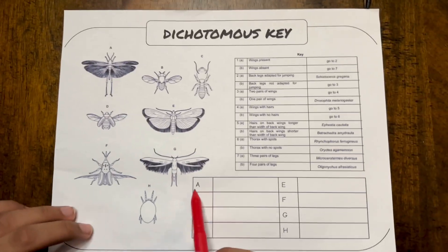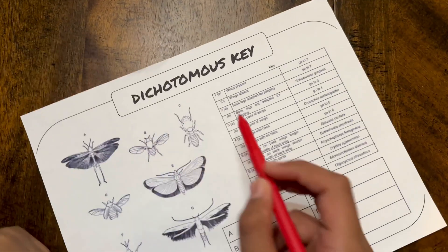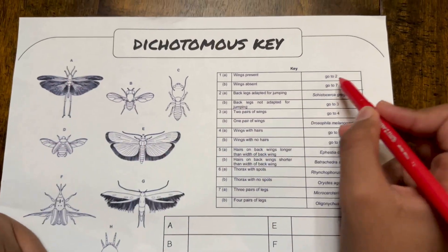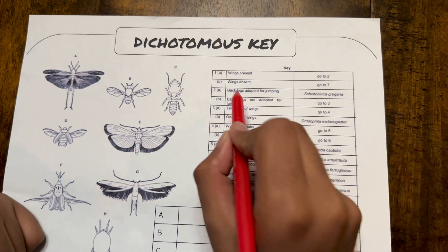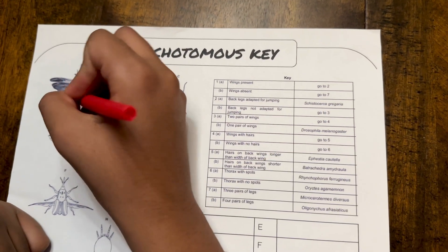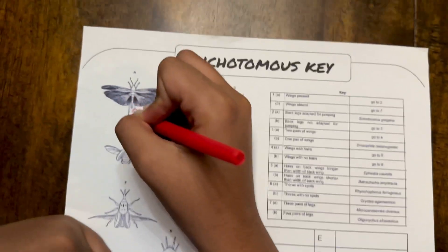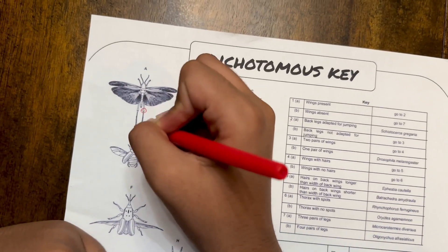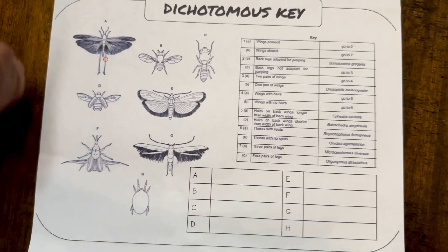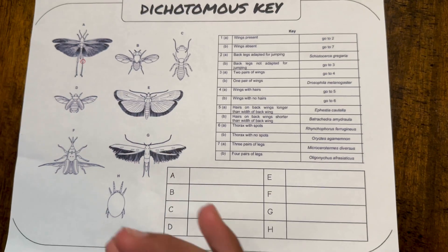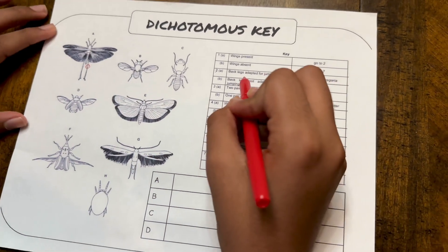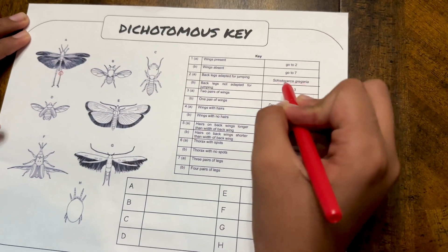Let's take organism A. The first question is: are wings present or wings absent? There are wings, so we go to number two. Number two asks: are back legs adapted for jumping or not adapted for jumping? We can see a joint here, and when there's a joint it signifies the ability to jump. However, there are also tiny hairs on the legs used to prevent small objects from attaching, so it is not adapted for jumping. This organism matches this one.